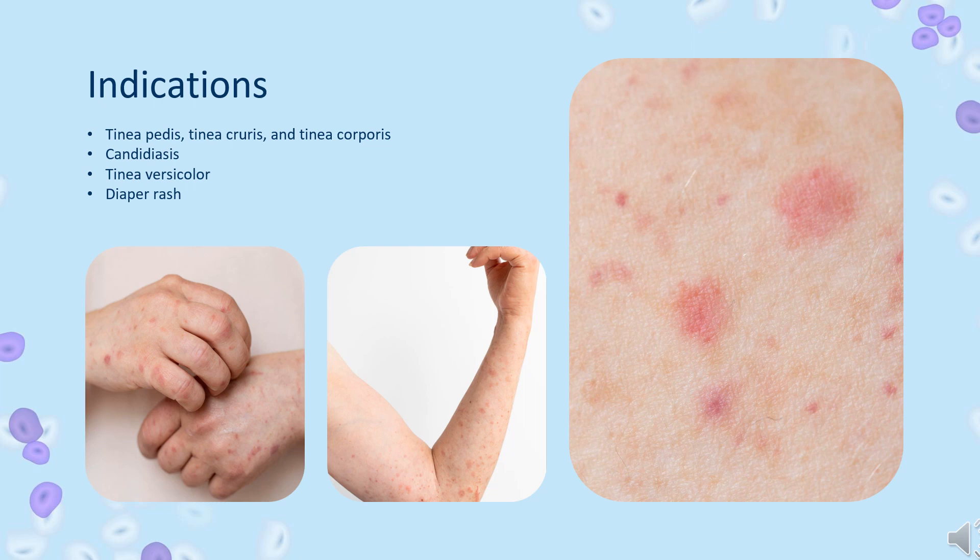Oral preparations: The oral troche preparation is indicated for the local treatment of oropharyngeal candidiasis. It is also indicated as a prophylactic drug to reduce the incidence of oropharyngeal candidiasis in patients immunocompromised by conditions such as chemotherapy, radiotherapy, or steroid therapy utilized in the treatment of leukemia, solid tumors, or renal transplantation. Troche preparations are not indicated for the treatment of any systemic mycoses.